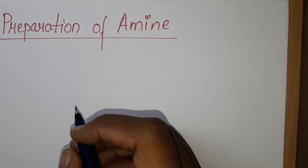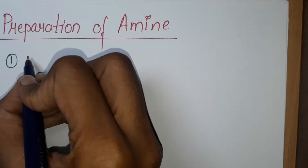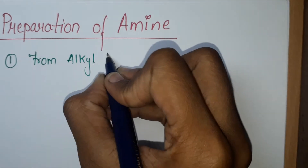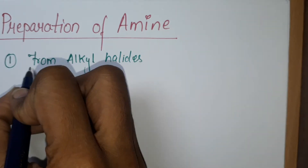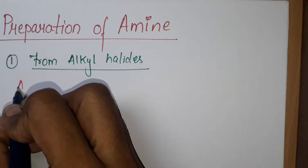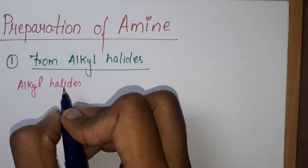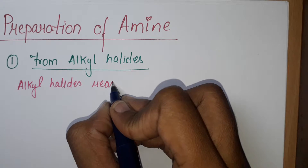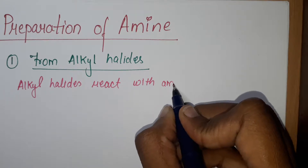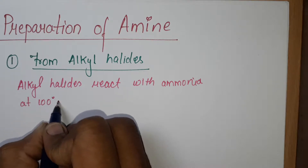Let's begin. The first preparation: amines are prepared from alkyl halides. Alkyl halide reacts with ammonia at 100 degrees Celsius.